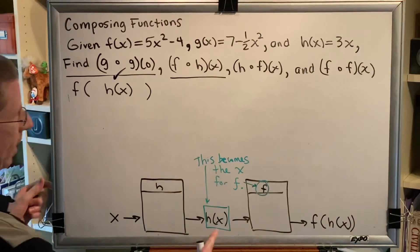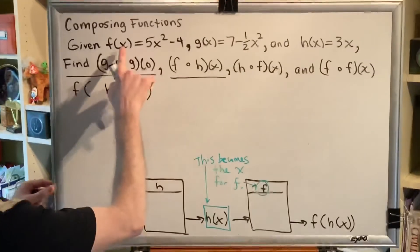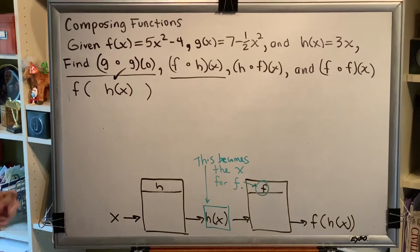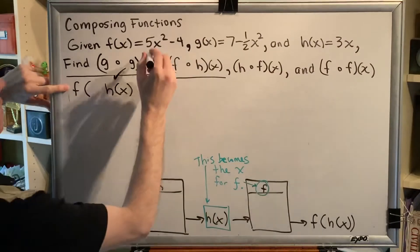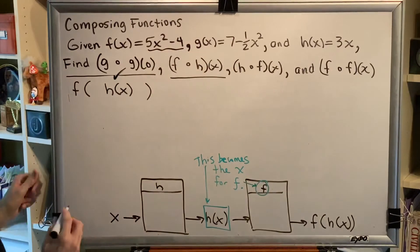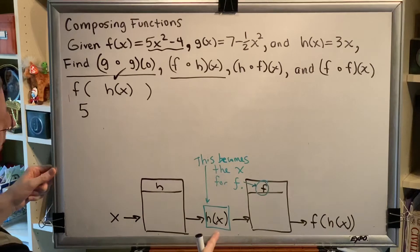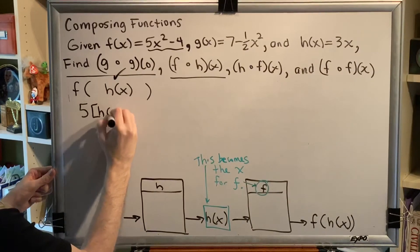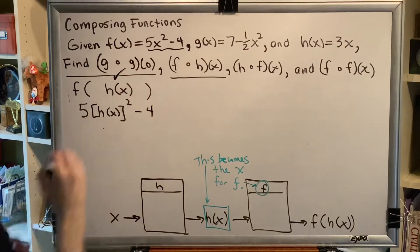We know that we need to put an h of x in place of every x in f. So whatever you see listed first, that is the function that you're going to use. But instead of writing x, you're going to write h of x instead. So we get 5h(x) squared minus 4.